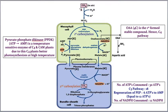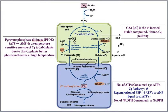Now for the mechanism of the C4 pathway. Atmospheric CO2 reacts with water, releasing hydrogen, and converts into bicarbonate (HCO3⁻). This bicarbonate then reacts with phosphoenolpyruvate (PEP), a 3-carbon compound, in the presence of PEP carboxylase.